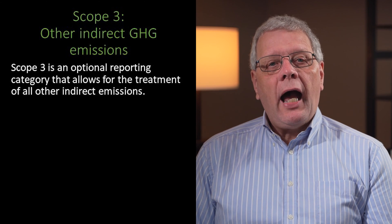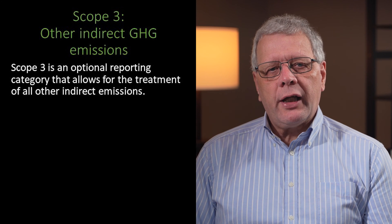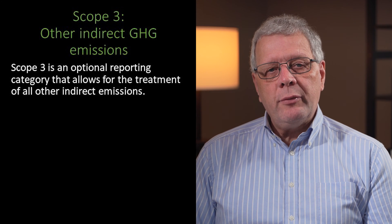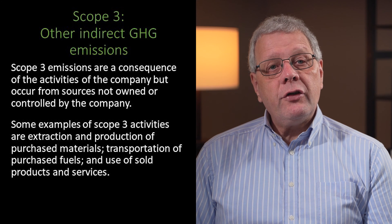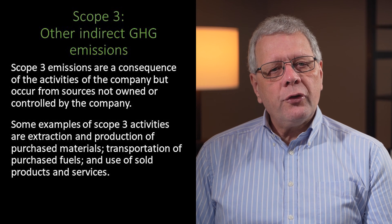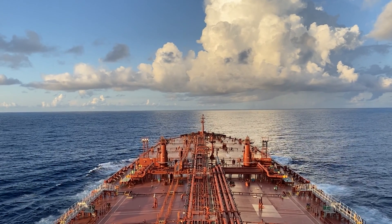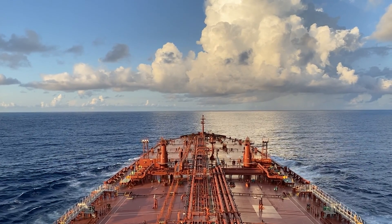Scope 3 covers other indirect GHG emissions. Scope 3 is an optional reporting category that allows for the treatment of all other indirect emissions. Scope 3 emissions are the consequence of the activities of the company, but occur from sources not owned or controlled by the company. Examples of scope 3 activities include extraction and production of purchased materials, transportation of purchased fuels, and use of sold products and services.